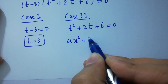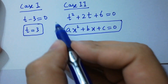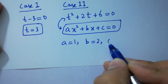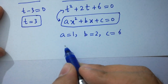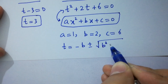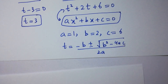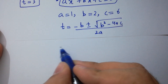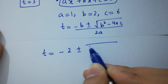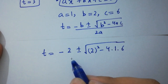Comparing t squared plus 2t plus 6 equals 0 with ax squared plus bx plus c equals 0, we get a equals 1, b equals 2, and c equals 6. Applying the quadratic formula: t equals minus b plus or minus square root of b squared minus 4ac, over 2a. Substituting: t equals minus 2 plus or minus square root of 4 minus 4 times 1 times 6, over 2 times 1.